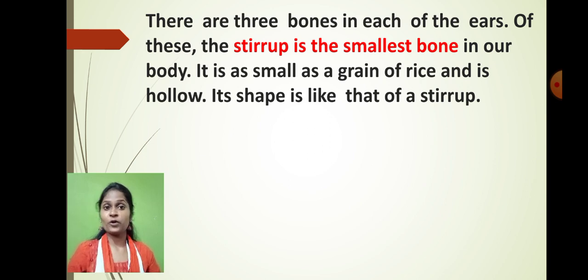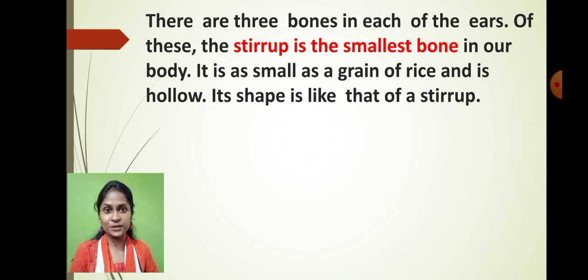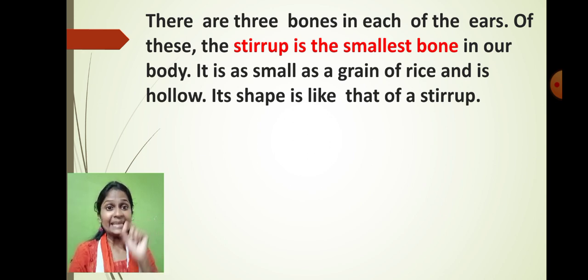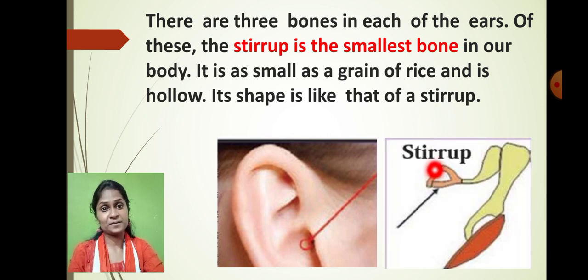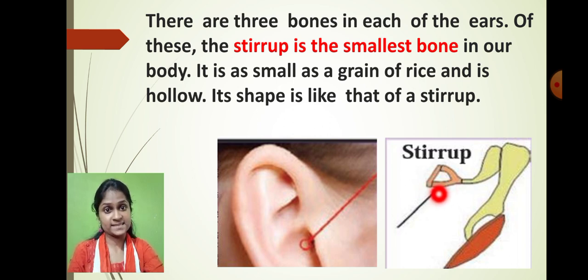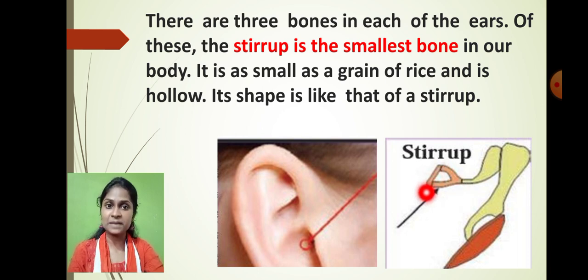Do you know that there is a smallest bone which is present in our body? That smallest bone is present in our ear. In the ear region, there is one smallest bone which is present. That smallest bone is called as stapes. You can see that it is of the size of a grain of rice. This is the smallest bone in our body — we call it as stapes.